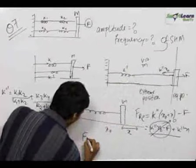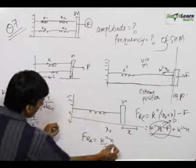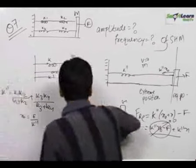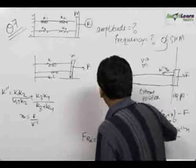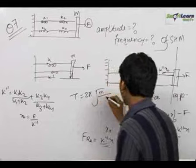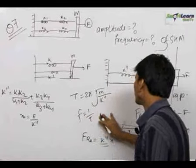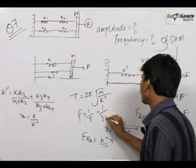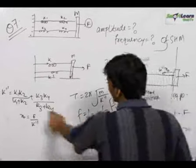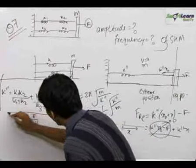Therefore, the net restoring force becomes equal to k double dash·x, which is directly proportional to x. Therefore the time period is equal to 2π√(M upon k double dash), and frequency is equal to 1 upon 2π times √(k double dash upon M), where the value of k double dash is substituted as derived.